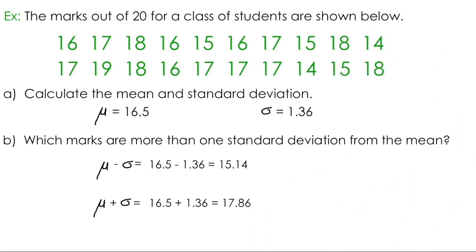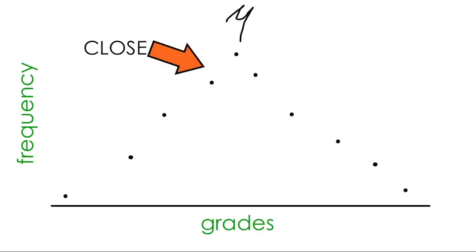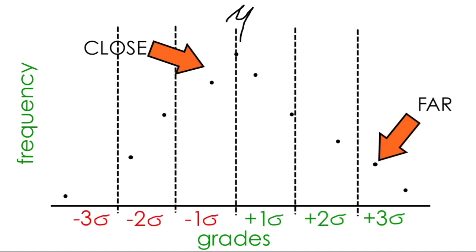But what does this mean? Remember, standard deviation is supposed to help us analyze the spread of the data. If we represent the data visually and look at the frequency versus the marks in this class, we know the mean is 16.5. We just calculated that any mark below 15.14 is more than one standard deviation away from the mean on the lower end of the data set. And we know that any mark greater than 17.86 is more than one standard deviation away from the mean in the upper range of the data set. Remember the problem at the beginning of this video? We were able to say that this data value is close to the mean and this data value is far. But now that you've learned how to calculate standard deviation, we can communicate just how far away from the mean these data values are.